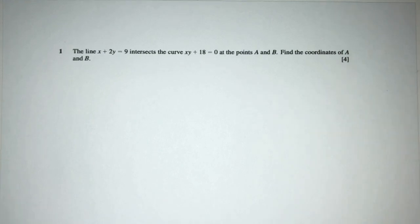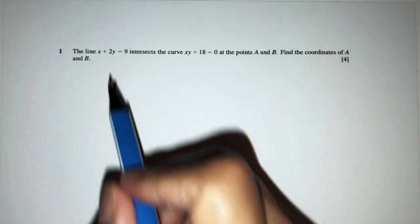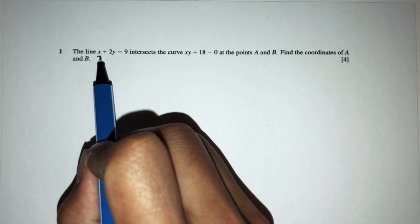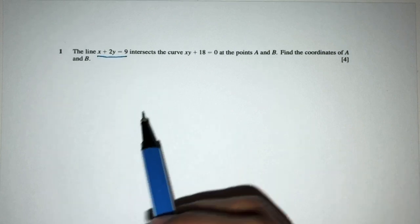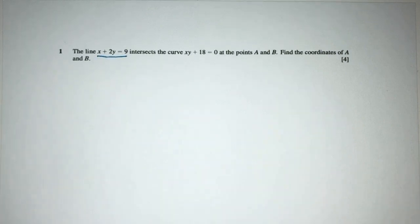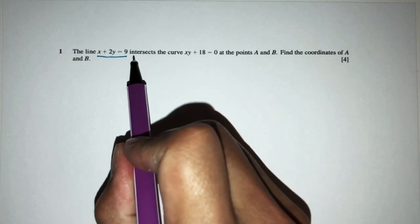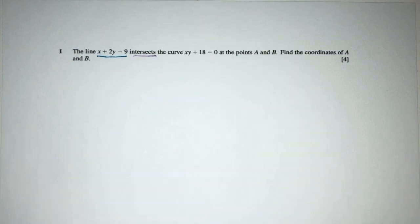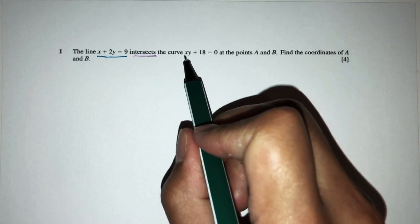The line x plus 2y is equal to 9, so this is the equation of a straight line. Now we can see the line intersects, it cuts the curve xy plus 18 equal to 0.